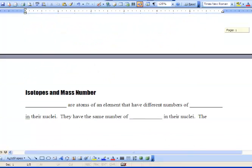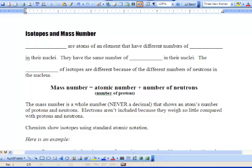So, we're on to isotopes and mass number. Now, we talked about isotopes being different versions. So, isotopes are atoms of an element that have a different number of neutrons in their nuclei, but they have the same number of protons. That's really important to remember.